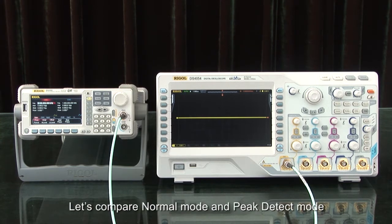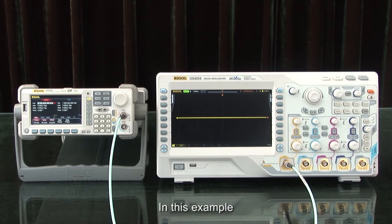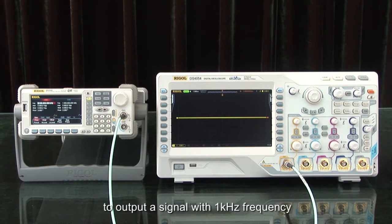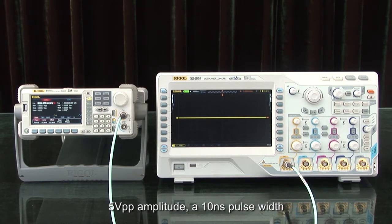Let's compare normal mode and peak detect mode. In this example, we are using a Rigol DG5000 arbitrary waveform generator to output a signal with 1 kHz frequency, 5 volt peak-to-peak amplitude, and a 10 nanosecond pulse width.